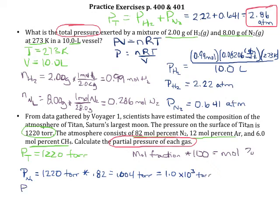We do the same for argon. The total pressure is 1,220 torr, and 12% of that is due to argon, so we multiply by 0.12, giving us 146.4 torr. Rounding to two significant figures, that's 1.5 × 10² torr.